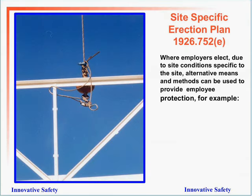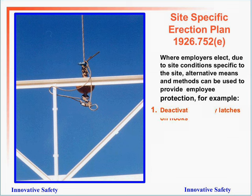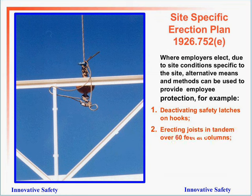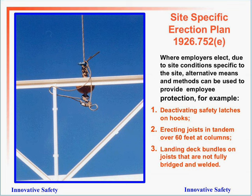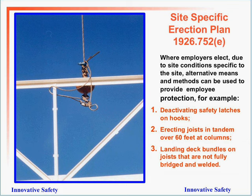Site-specific erection plans: where employers elect, due to site-specific conditions, alternative means and methods can be used to protect employees. For example, you can deactivate safety latches on hooks, erect joists in tandem that are over 60 feet, and land decking bundles on joists that are not fully bridged and welded. However, if you're going to do any of these things, you need a written site-specific plan showing how you will manage safety and mitigate any problems that might arise.